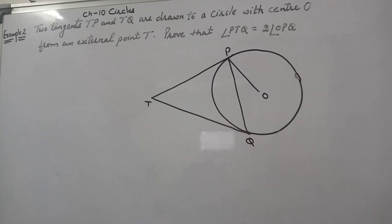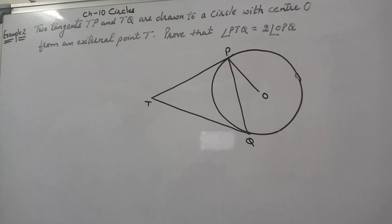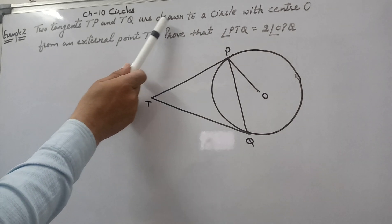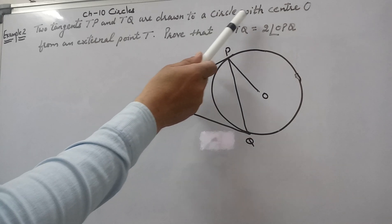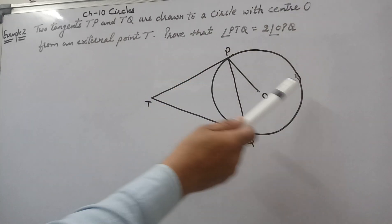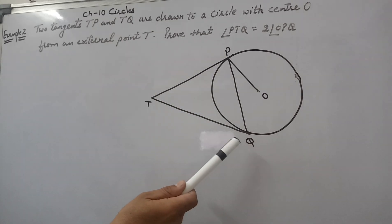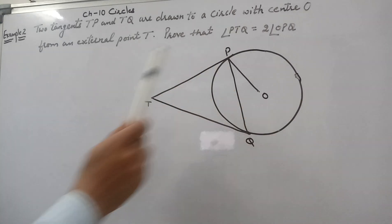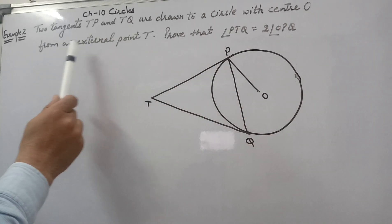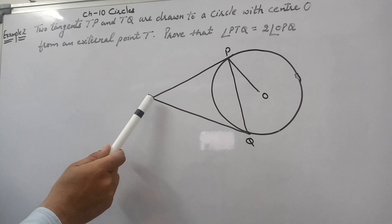Hello friends, welcome to my YouTube channel. Let's do this question from Chapter 10 Circles of Class 10 — this is Example Number 2 of the NCERT book. The question is: two tangents TP and TQ are drawn to a circle with center O. This is the circle, this is center O, and these are the two tangents TP and TQ on this circle from an external point T.